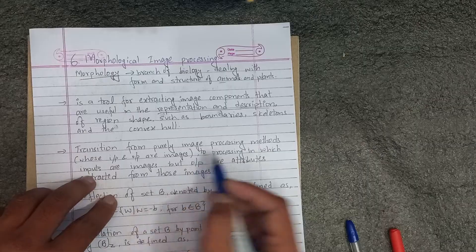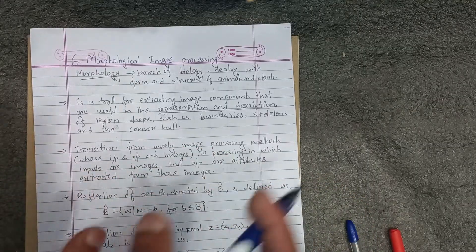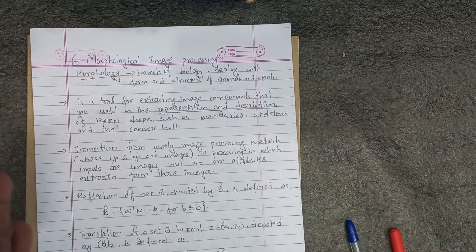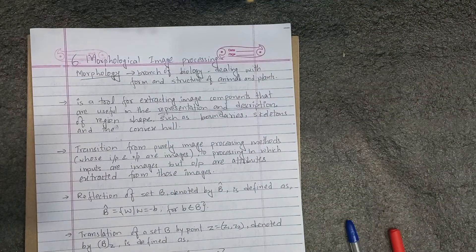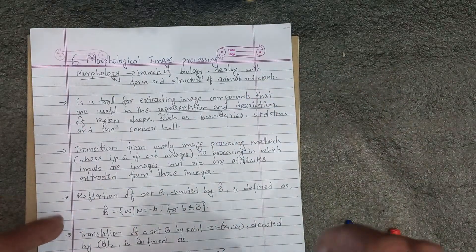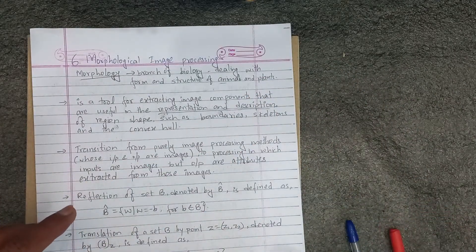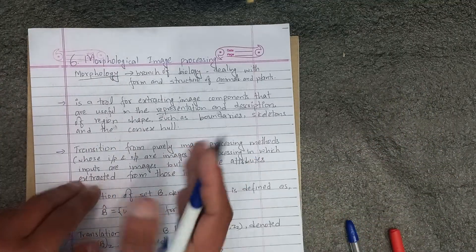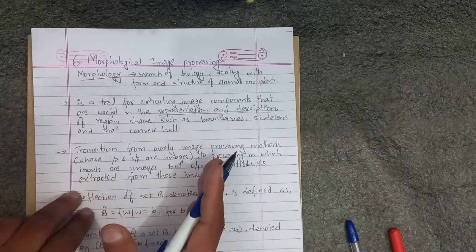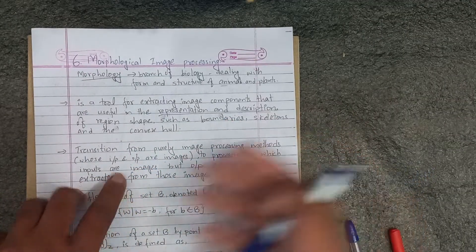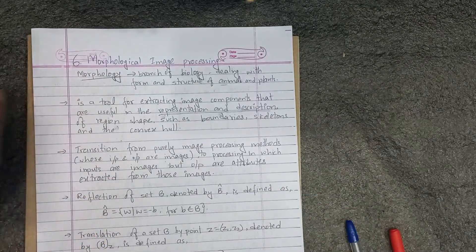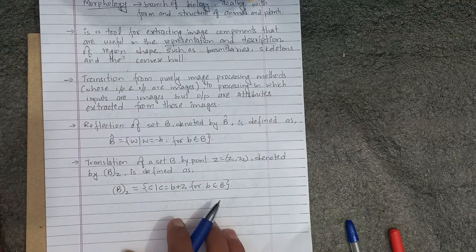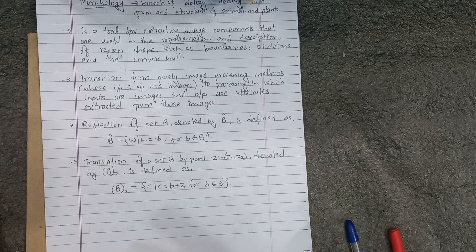The morphological image processing deals with attributes of the image — it is similar to a transformation where the output image is also attributed. Now we have to learn two basics: opening, closing, erosion, and dilation.